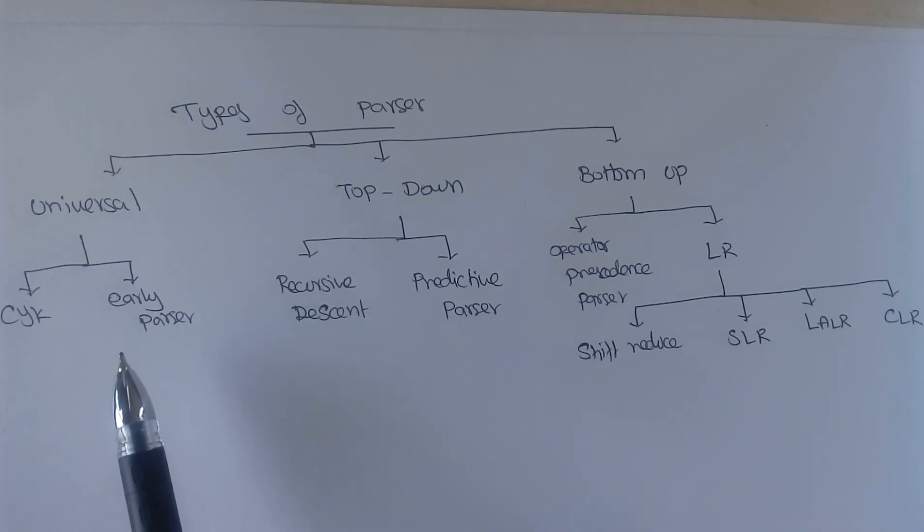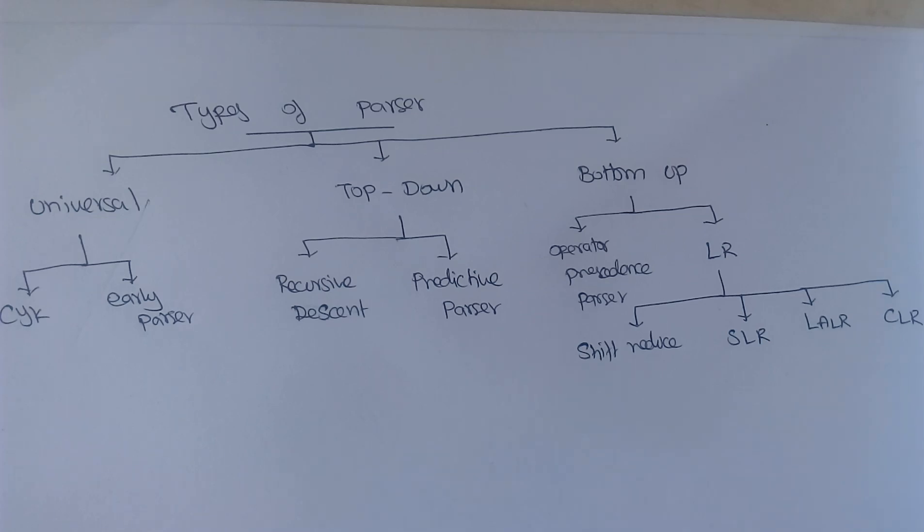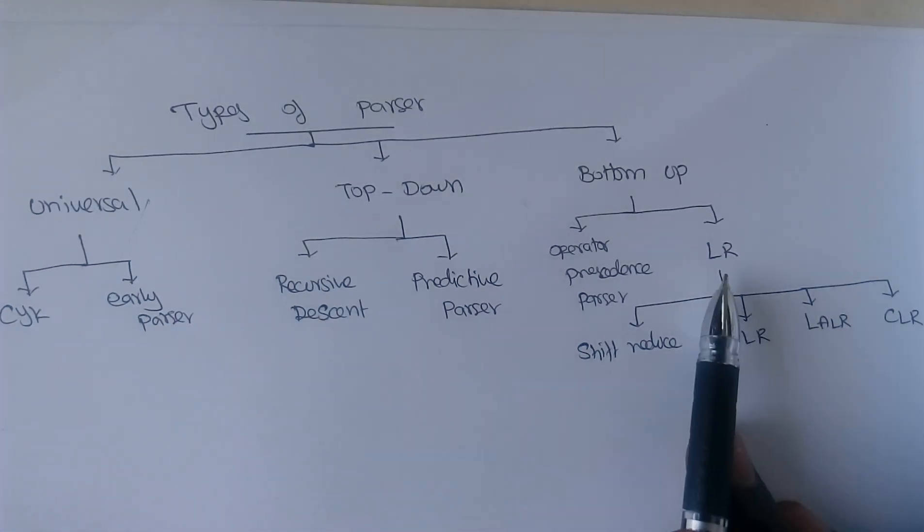The reason is the compiler needs to use the production efficiently. So we are not going to use this universal parser and CYK algorithm. We are just going with top-down parser and bottom-up parser.